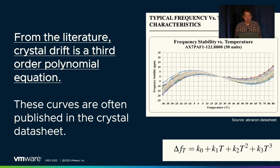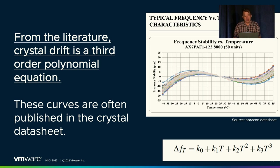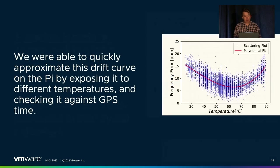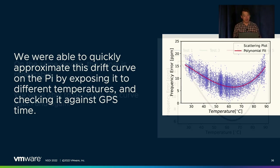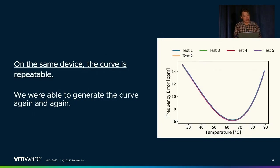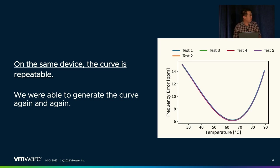From the literature, we know that clock drift follows a third-order polynomial equation, which looks something like this on a crystal datasheet. Note that the negative 40 degrees portion of the curve is a range most servers probably aren't running at. We were able to generate this curve on the Pi by exposing it to different temperatures — pointing a hair dryer at it, dunking it in an ice bucket — and referencing the error against accurate GPS time. We found that on the same Pi, the curve was usually repeatable, even though the temperature profiles across tests were wildly different.